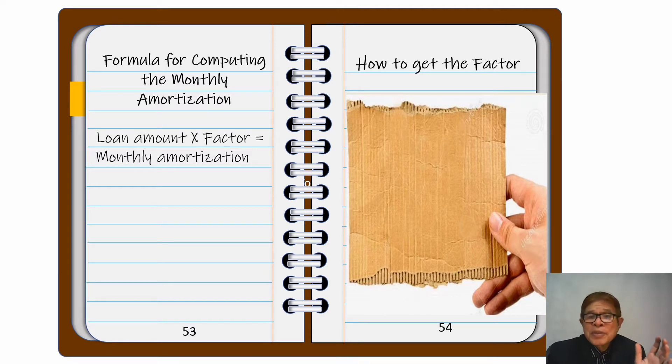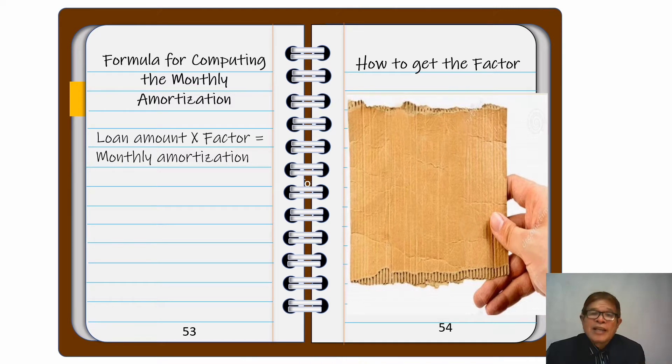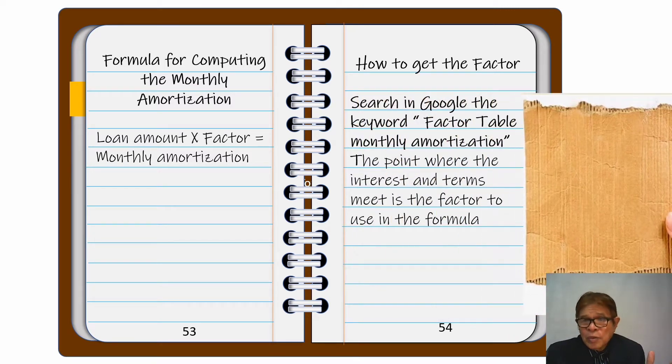But how do you get the factor? You can search in Google the keyword factor table monthly amortization. The point where the interest and terms meet is the factor to use in the formula.